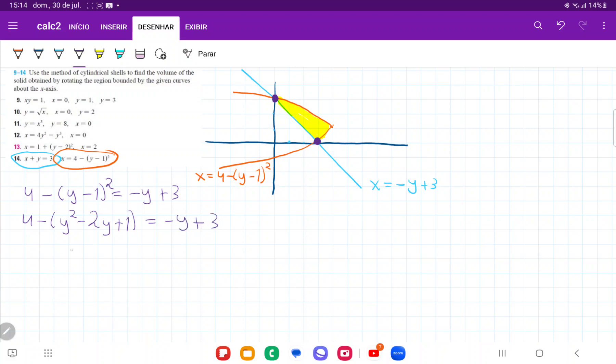So now I'm going to expand this even further. 4 minus y squared, apply that minus. Minus minus gives us plus 2y minus 1. And then I'm going to bring this stuff here to the left-hand side. So plus y minus 3 is equal to 0.